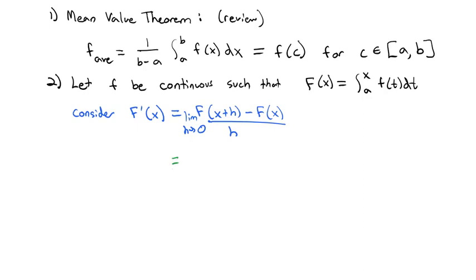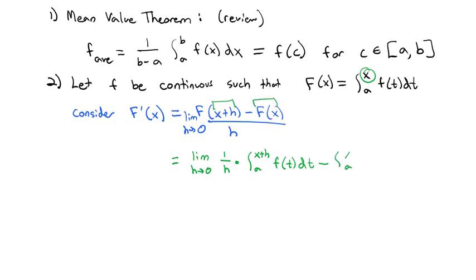Let's work with that definition. We're still going to take the limit as h goes to 0, pulling 1/h out front. For F(x+h), we replace the upper limit x with x plus h, giving the integral from a to x plus h of f(t) dt. Then we subtract F(x), which is the integral from a to x of f(t) dt. That 1 over h multiplies through everything.